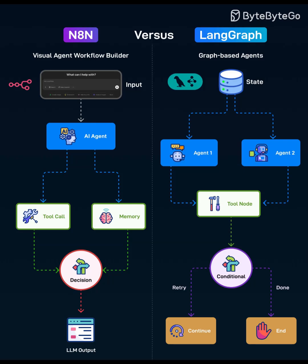LangGraph — graph-based multi-agent control. LangGraph leans into explicit state and control flow. Agents are graph nodes, edges, and code transitions based on tool results, confidence, or policy. A central state object persists memory — scratchpads, working sets, retrieved docs — so each hop has deterministic inputs. Conditional nodes control retries, loops, and termination.